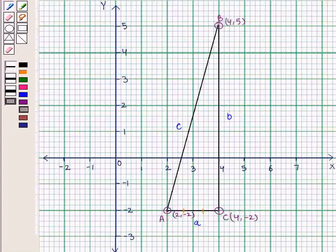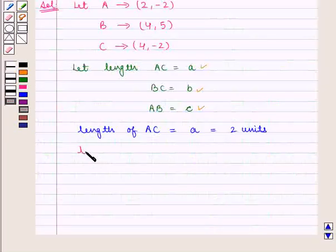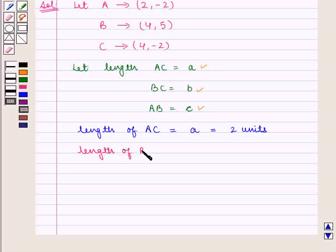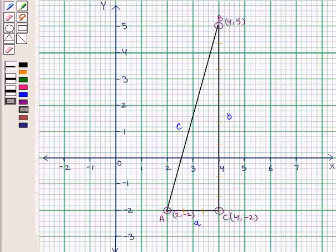And the distance between B and C is 7 units, so length of BC, that is b, is equal to 7 units. Here we need to find the distance between points A and B. For this, we shall find length of the side AB.